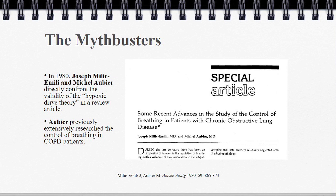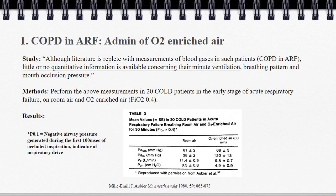The first study looked at COPD patients in the early stages of acute respiratory failure, giving them O2-enriched air at an FiO2 of 40%. As they note in the opening, although the literature is replete with measurements of blood gases in such patients, little or no quantitative information is available concerning their minute ventilation, breathing pattern, and mouth occlusion pressure. So they set out to measure those three parameters.